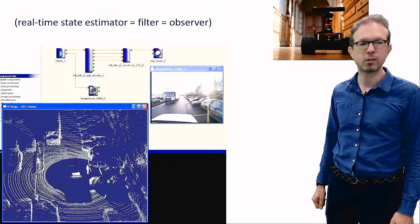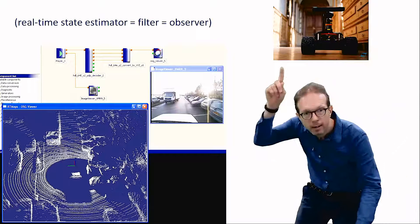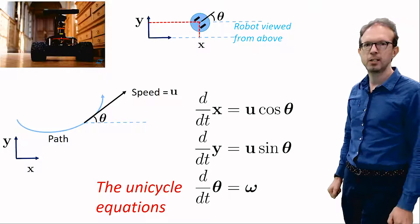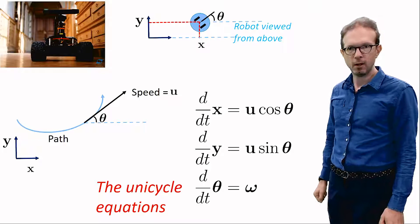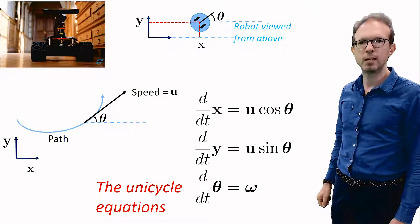Take the robot that's driving along the corridors of the Ecole des Mines in Paris, and let's discuss a dynamical model for it. Generally, we use what is known as the unicycle equations. At every instant in time, the robot has a position encoded in the coordinates x, y, and an orientation encoded by the angle theta. The idea that underlies this model is that if the wheels of the robot roll but do not slip, then the tangent vector to the robot's path has norm u and direction theta, which coincides with the robot heading.